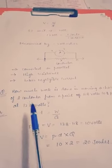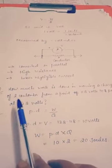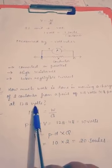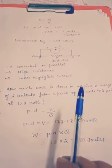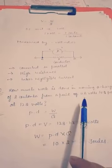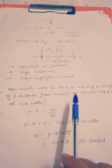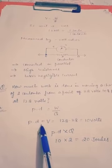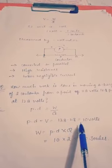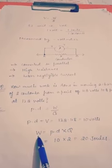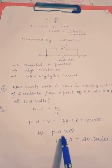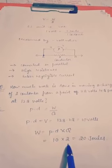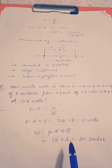Now we will see a numerical example. How much work is done in moving a charge of 2 Coulombs from a point at 118 Volts to a point at 128 Volts? The potential difference will be 128 minus 118, which equals 10 Volts. Work done equals potential difference multiplied by charge, so 10 into 2 equals 20 Joules. The answer is 20 Joules.